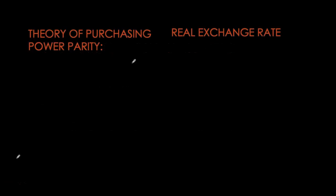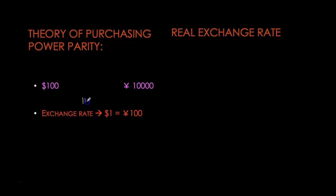We can understand purchasing power parity with an example. Assume we have a market basket costing $100 in Canada, and the exact same identical market basket costs 10,000 yen in Japan. According to purchasing power parity these prices are exactly equal. Putting the two prices equal to each other gives us the exchange rate for the Canadian dollar as 100 yen — we've simply set $100 equal to 10,000 yen and solved for one dollar. We can also understand PPP through the real exchange rate.